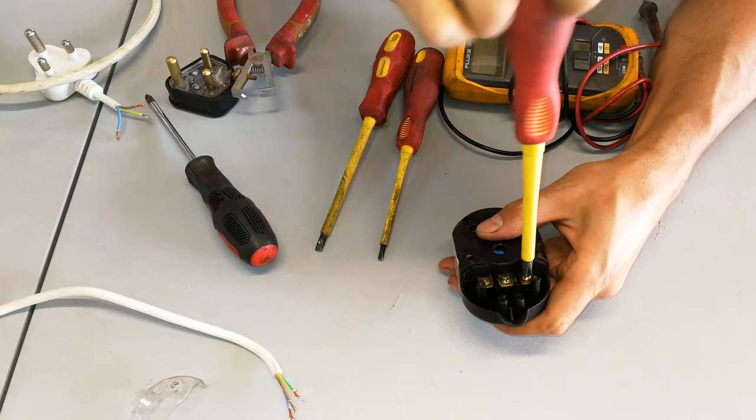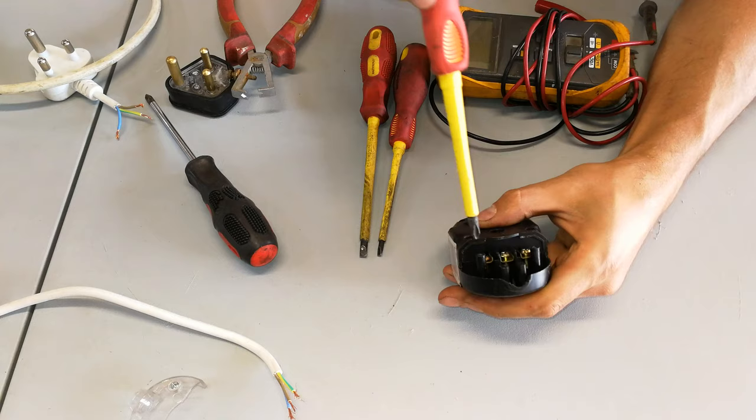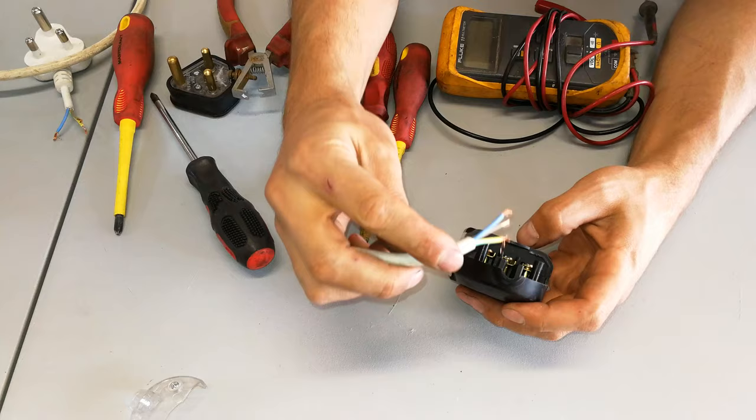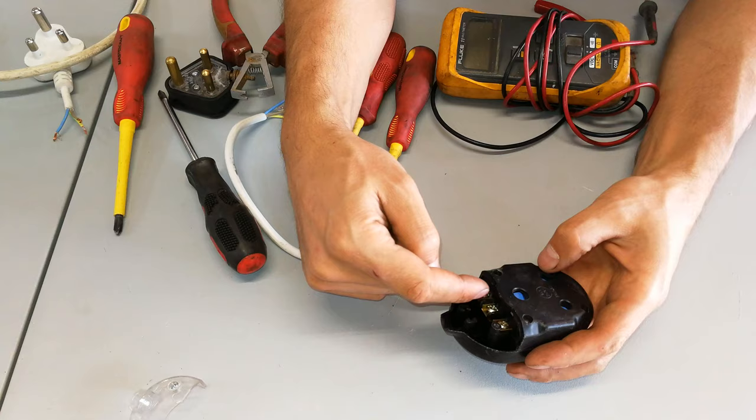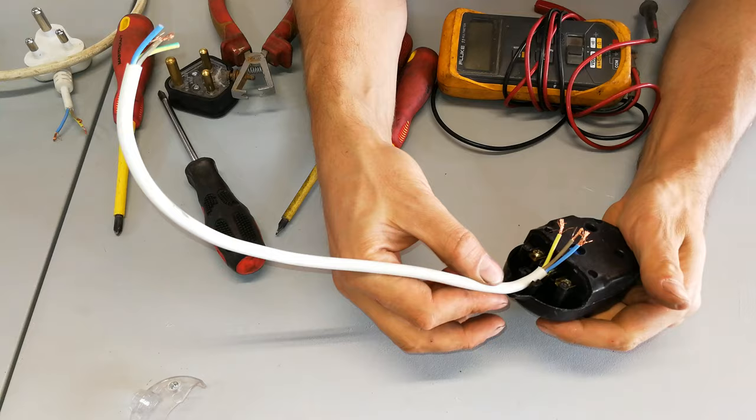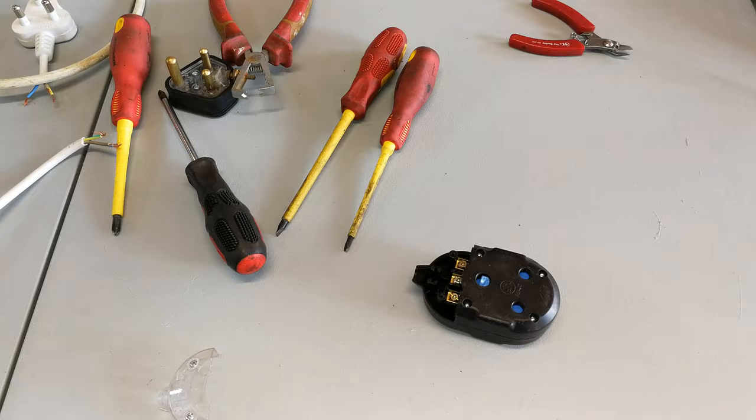I'm going to unscrew these terminals just using a star screwdriver. There we go. And now you can see what is happening here. One of these is live, one is neutral, one is earth. And the extension cable is going to go in the middle there. So which is which? Now I'm going to show you how to work that out.